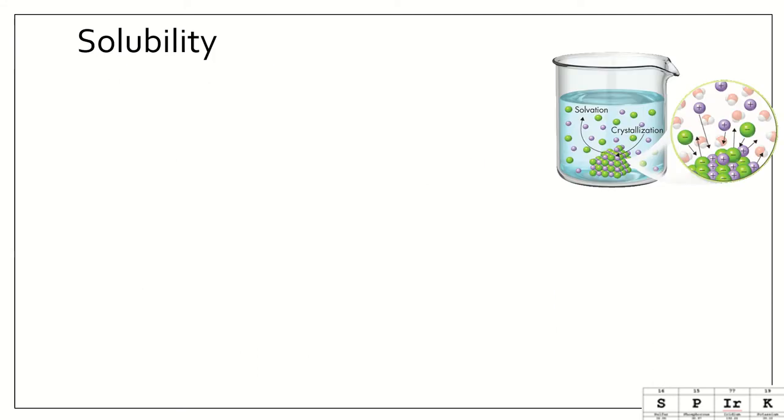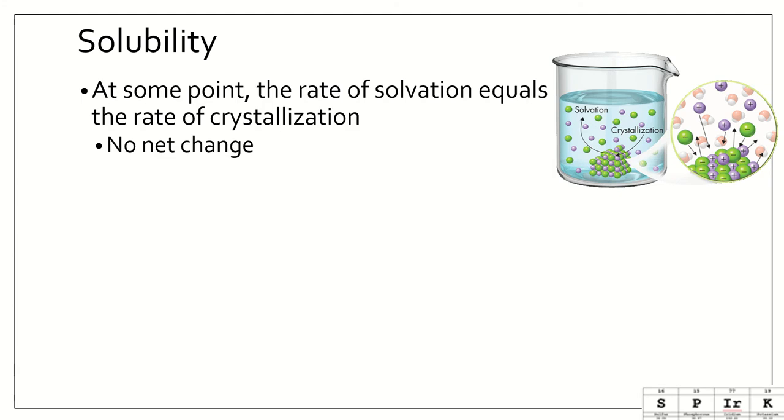Okay, so let's talk about solubility. At some point, the rate of solvation, which is the dissolving process, equals the rate of crystallization. And basically what that means is there's going to reach a point where I put enough sugar molecules into my water that some are going to dissolve and some are going to go back into the crystal of sugar. That's called crystallization. So what that means is that there's no net change. So we're not dissolving more because the same amount that's dissolving is coming back out into the solid form. So this solution is said to be saturated.